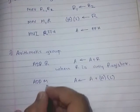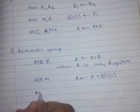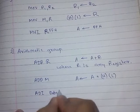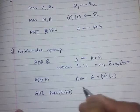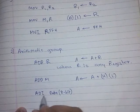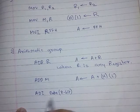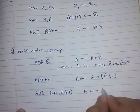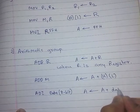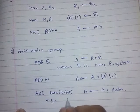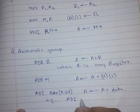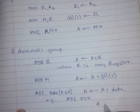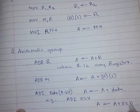Next: ADI N — add immediate data with the accumulator. This operation will be: A = A + data. For example, ADI 02H — then A will be A + 02H.